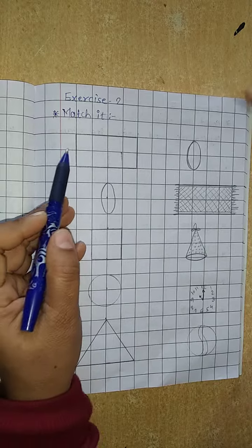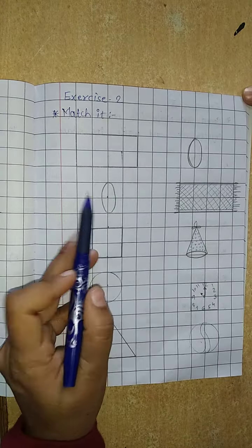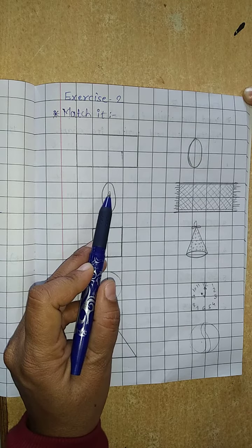Now in this exercise, here are given shapes and here are given objects. So we have to match shapes with their correct object.